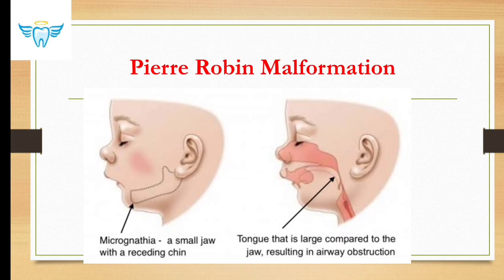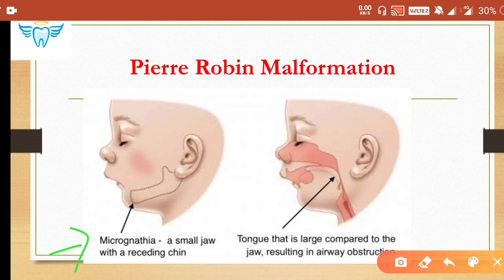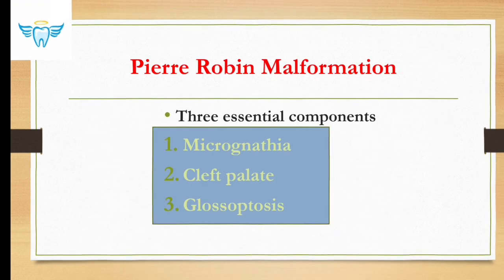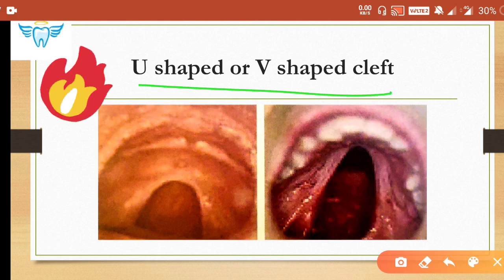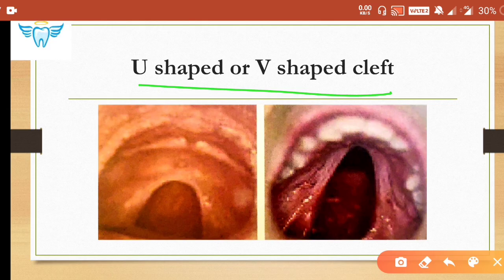You can see the micrognathia — small jaw with receding chin — and the tongue appears large compared to the jaw, though it is not actually enlarged. This results in airway obstruction, and obstructive sleep apnea is a remarkable symptom of Pierre Robin. The cleft seen is U-shaped or V-shaped, which is a peculiarity; it can involve the soft palate, hard palate, or both.